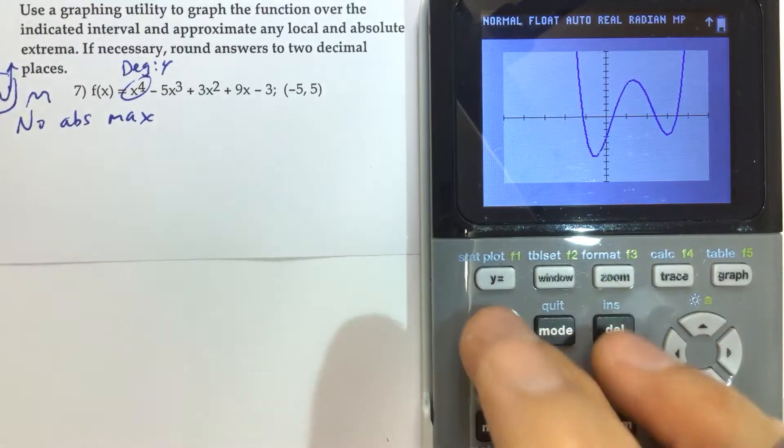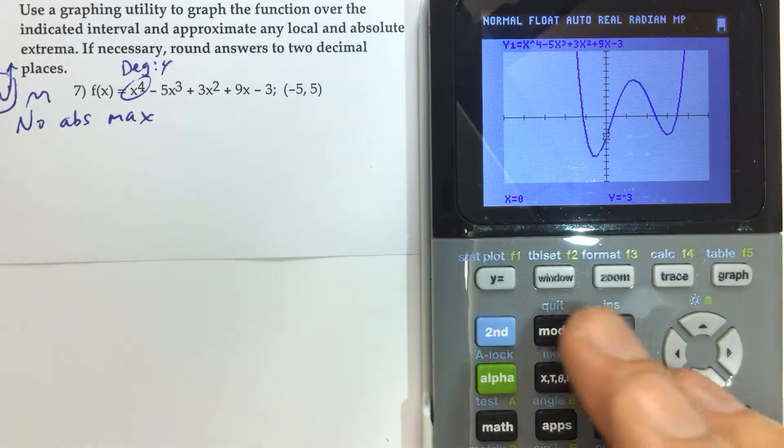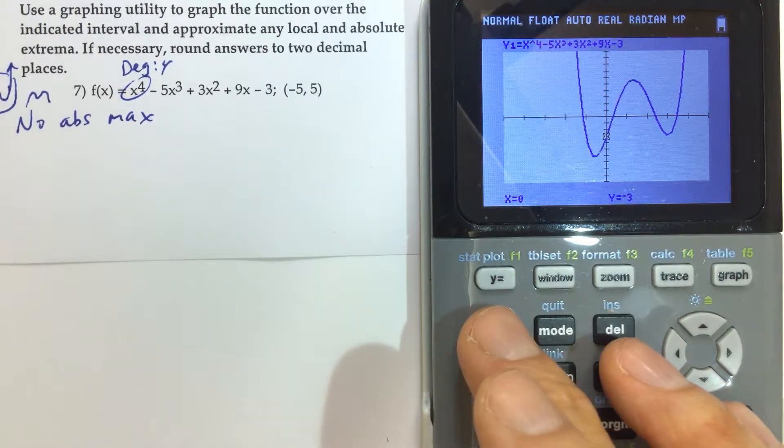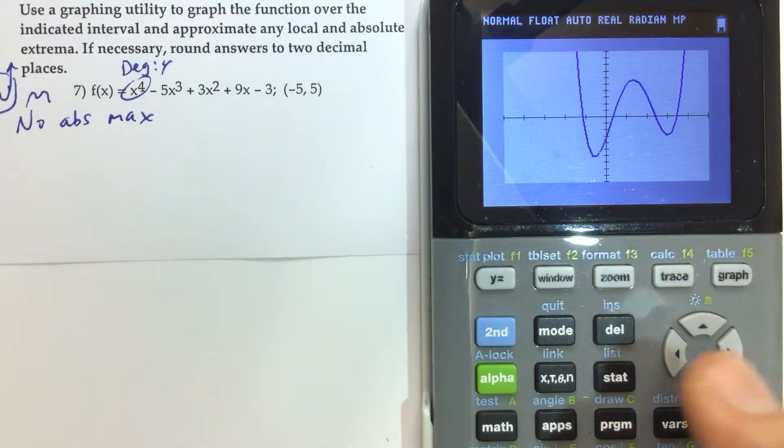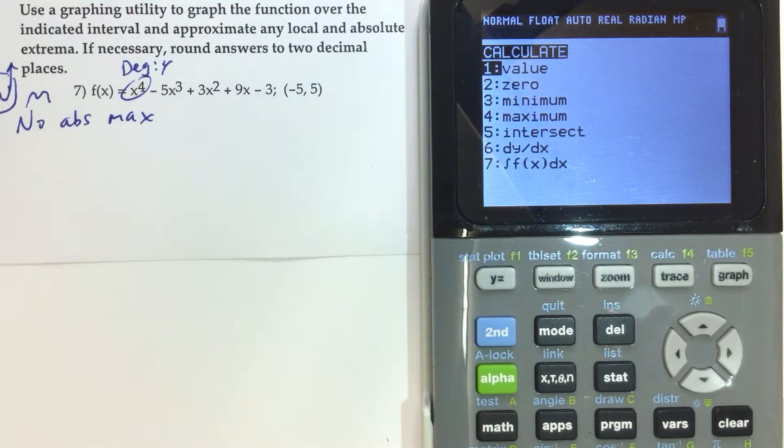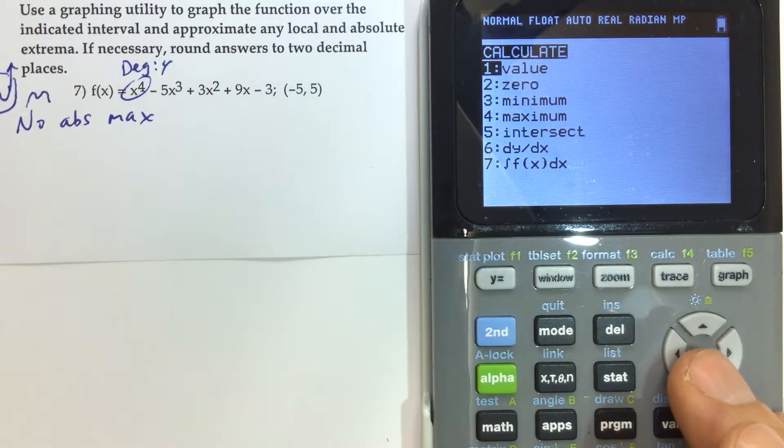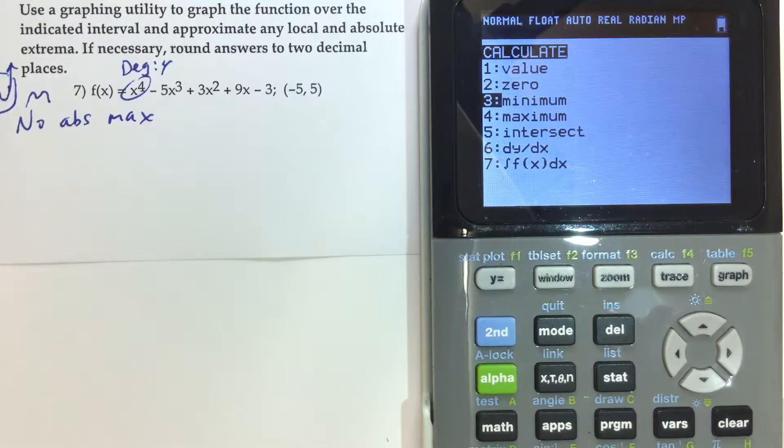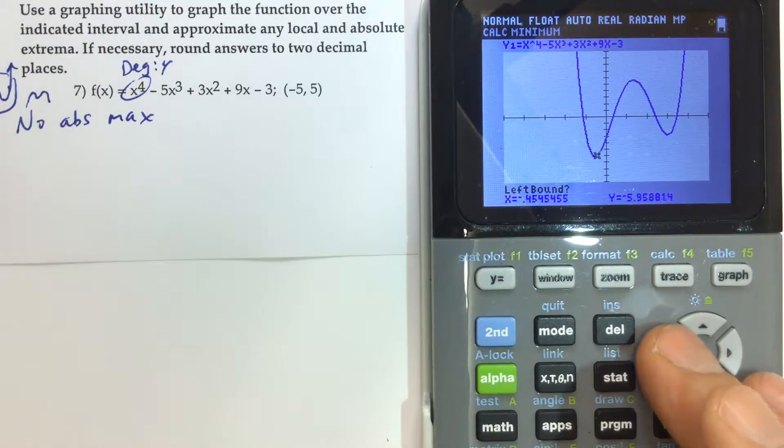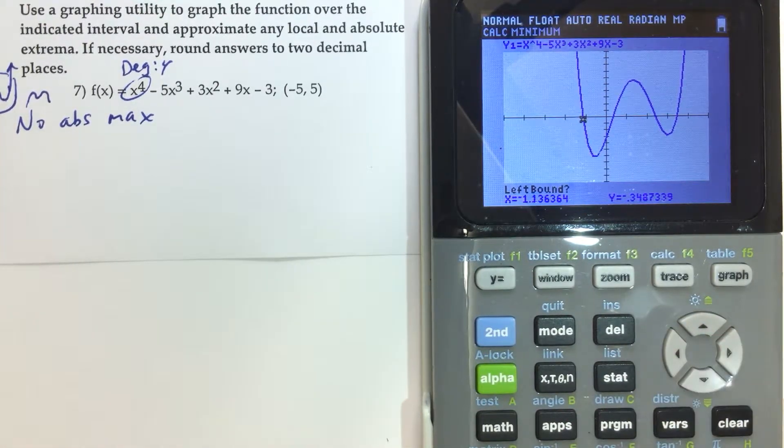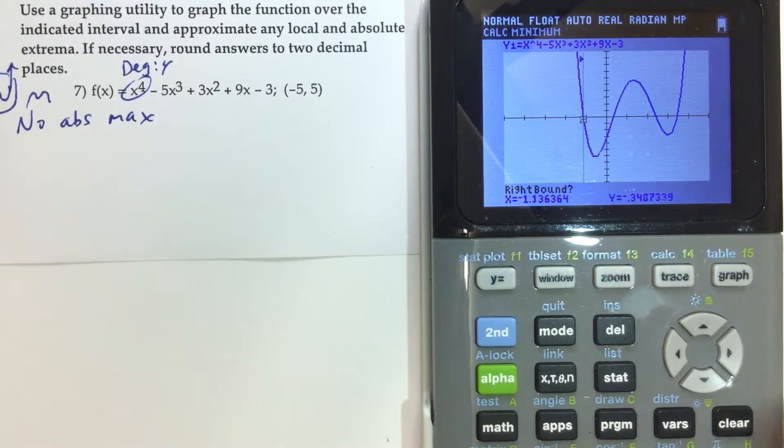And so if we second trace, okay, so I pushed a button here. Let me get out of this, and then I'll go back to the graph. Second trace for calculate. We want to calculate the minimum value. So we could scroll down to a 3 and hit enter, or just type a 3. And we want to surround that minimum value. So we want to mark our left side of that, move the cursor to the left-hand side of the minimum value there.